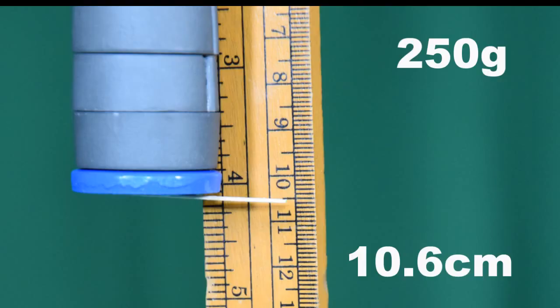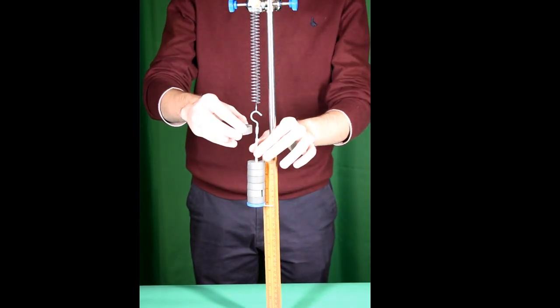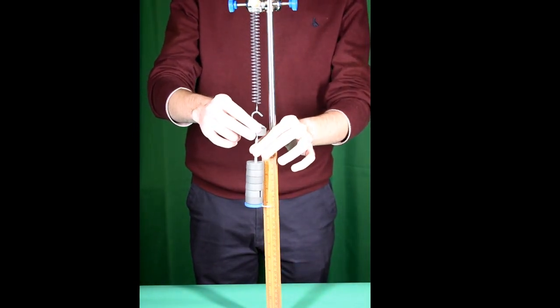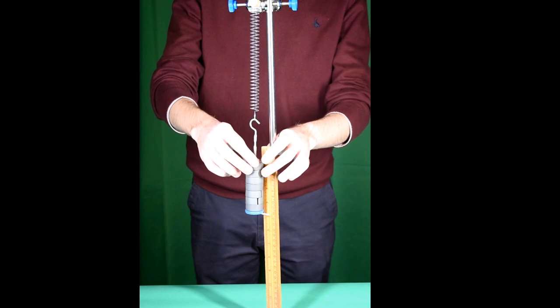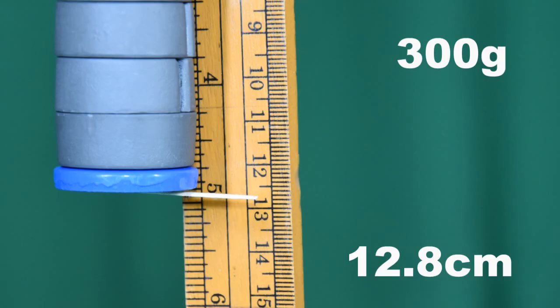10.5 cm. And another mass is added. 10.6 cm. And finally, the last mass, and this will give us six readings. 12.8 cm.